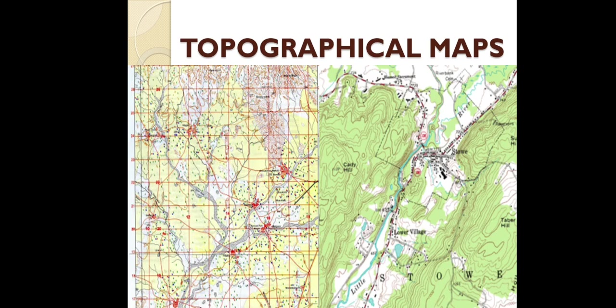Next is the topographical map. They are prepared on a large scale and are based on precise surveys conducted by the Survey of India, Dehradun. They show general surface features in detail, both natural and cultural. The Survey of India prepares these topographical maps, also known as topo sheets, for all parts of the country on scales like 1:50,000, 1:2,500,000, and 1:10,000,000. These maps are also known as international maps.